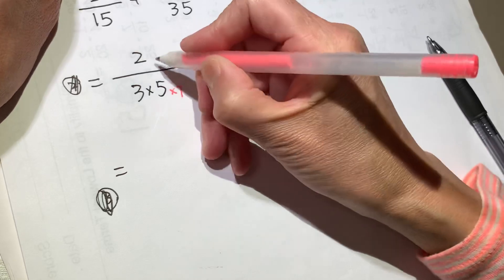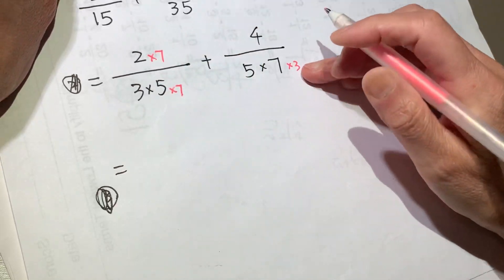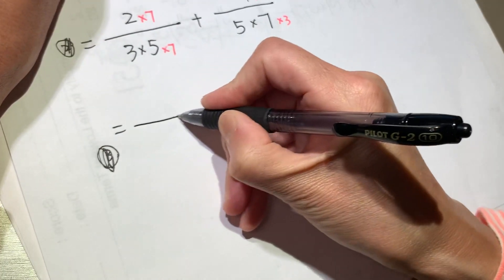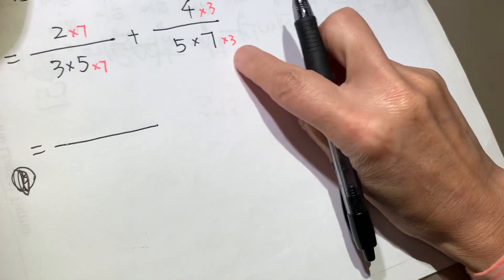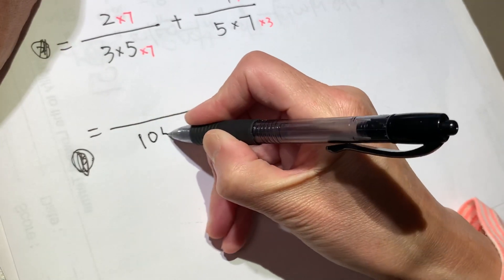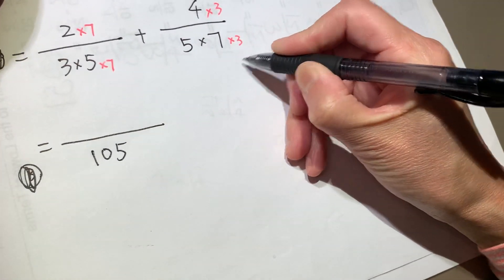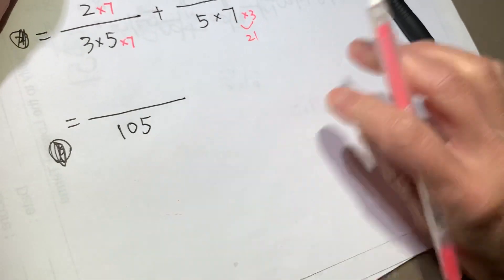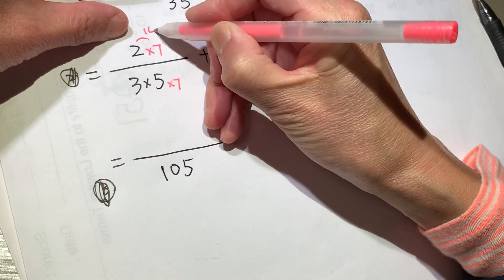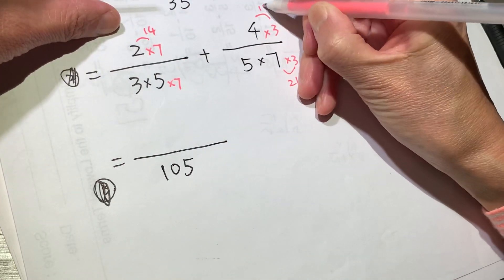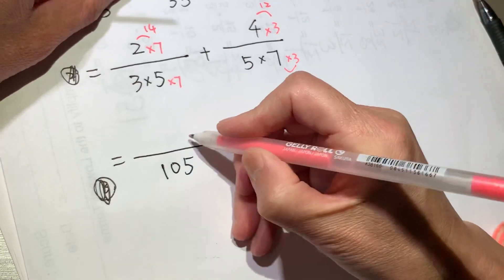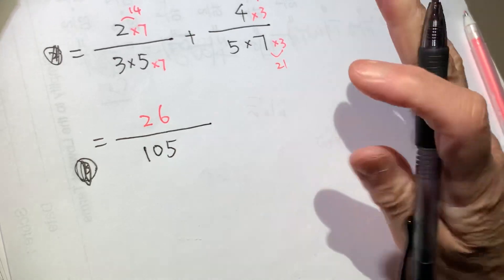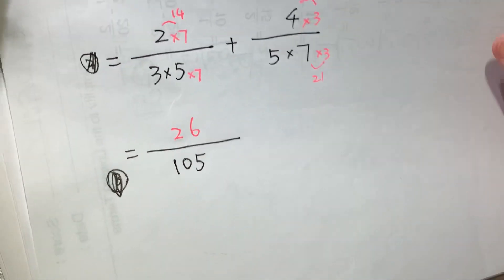So bottom times 7, top times 7. Bottom times 3, top times 3. It's 105. And this one is 14, and this one is 12. Altogether becomes 26. So this is the result. No more simplification to be done.